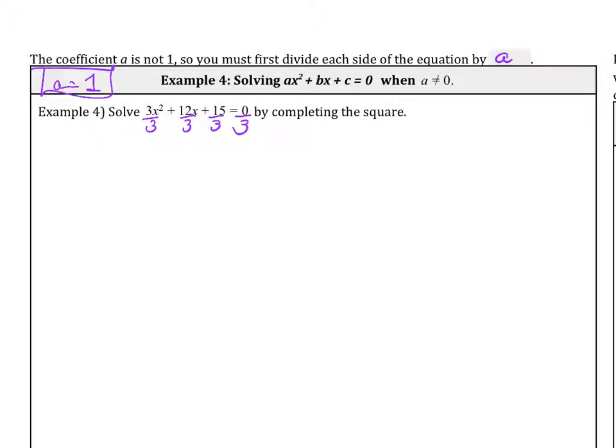Very, very important. Okay, that's just one of the rules of using completing the square. So a has to equal 1. We make it equal 1 by dividing out that a to every single term.